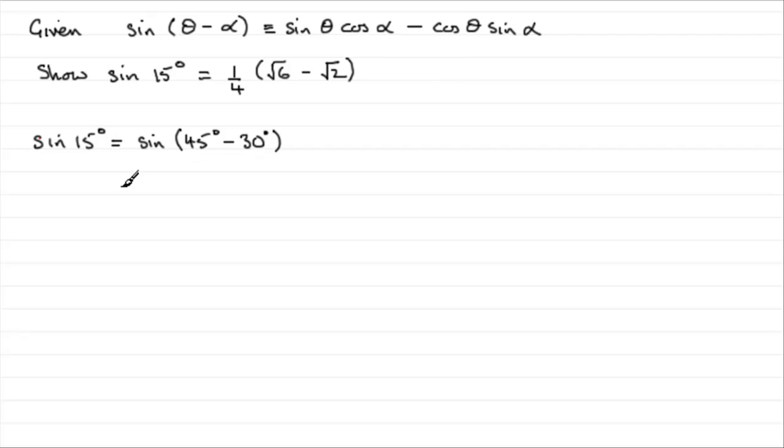So we can expand this using this identity. Theta's the 45 degrees, alpha's the 30 degrees. So we're going to have sine theta cos alpha for the first term, so sine of 45 degrees, cosine of 30 degrees. And then it's going to be minus cos theta sine alpha, so that's going to be the cos of 45 degrees times the sine of 30 degrees.